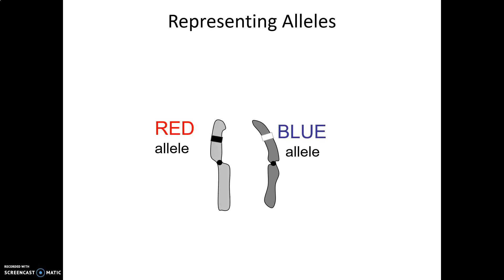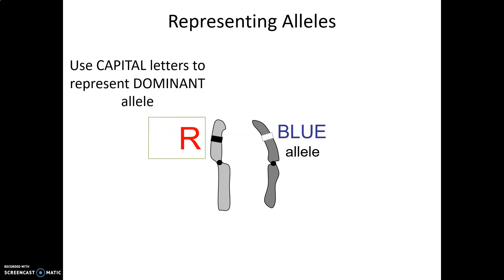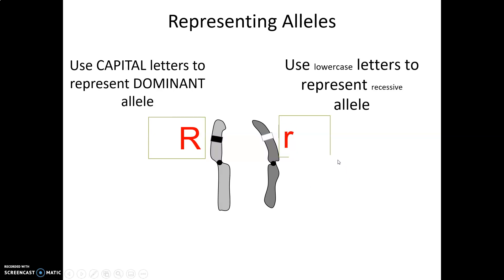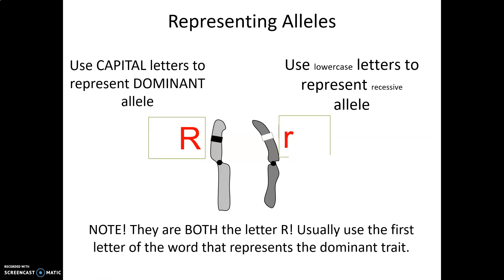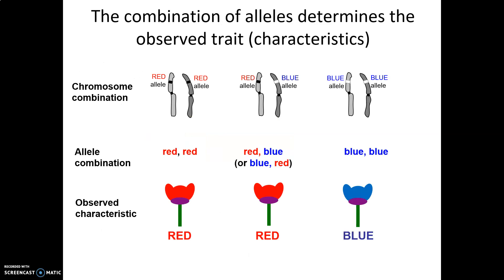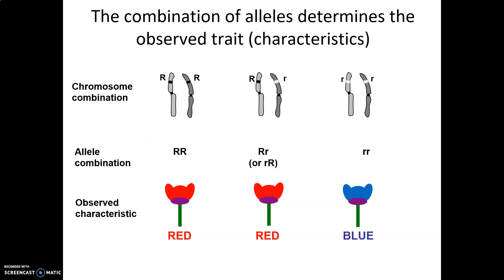Scientists have shortcuts when it comes to representing alleles. Instead of saying 'the allele that codes for the functional pigment enzyme' or 'the allele that codes for the non-functional pigment enzyme,' we could just say red or blue. But let's take it a step further: capital letters represent the dominant allele, and lowercase letters represent the recessive allele. When we represent alleles, we use the same letter — in this case R, the letter that represents the dominant trait. So big R, big R leads to a red flower; big R, little r also leads to a red flower — it has at least one dominant allele; little r, little r leads to a blue flower.